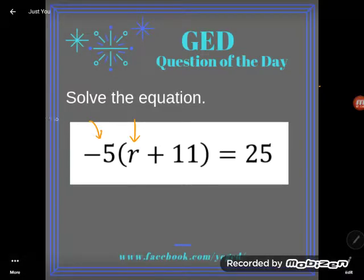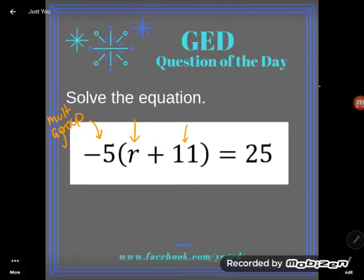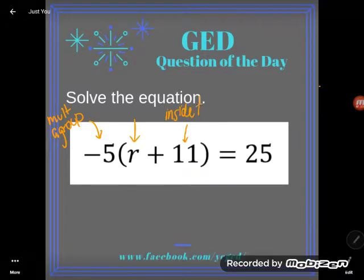Negative five is multiplying a group. Now, 11 is doing what with r? You can see this plus between them. So the 11 is adding with r, and there's a reason why I'm talking about this - you can see that it's inside the r group adding. See how it's inside the parentheses?